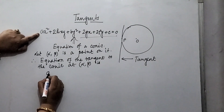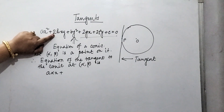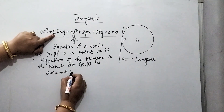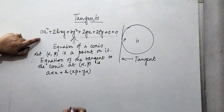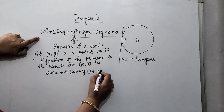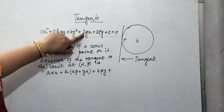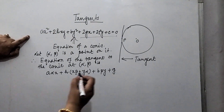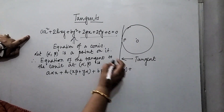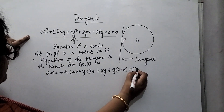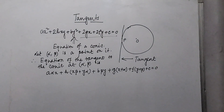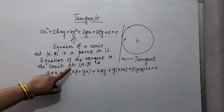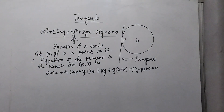The term ax² will be written as a·alpha·x; the term 2hxy will be written as h(x·beta + y·alpha); then by² becomes b·beta·y; then 2gx becomes g(x + alpha); then 2fy becomes f(y + beta); and c remains as it is, equal to 0. So this equation gives the equation of the tangent at the point (alpha, beta) to the conic ax² + 2hxy + by² + 2gx + 2fy + c = 0.